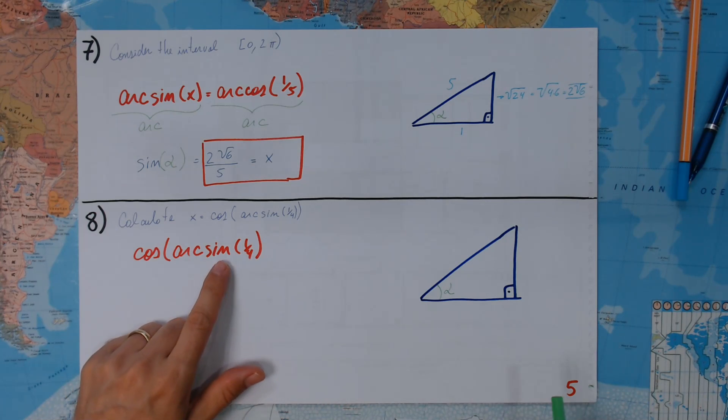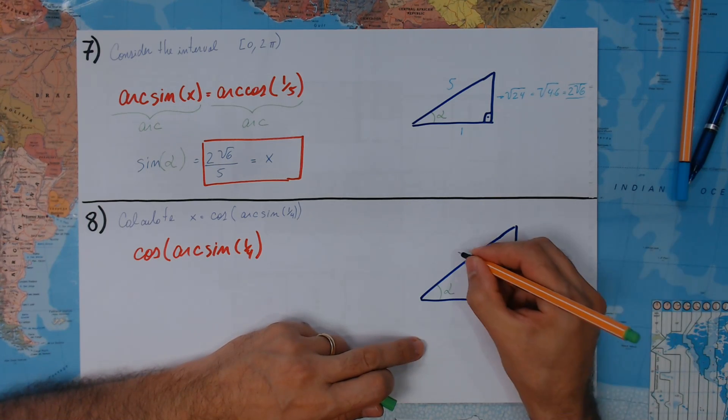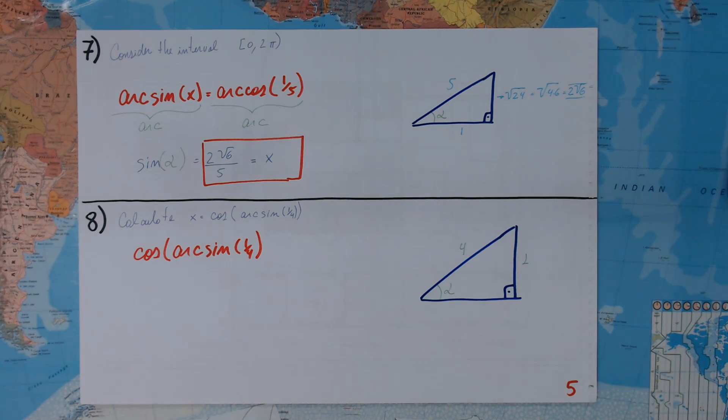Now, the sine of this arc is just 1/4. Let's just write it 1/4. This is the sine. Well, if we just apply Pythagoras, what do we get here?